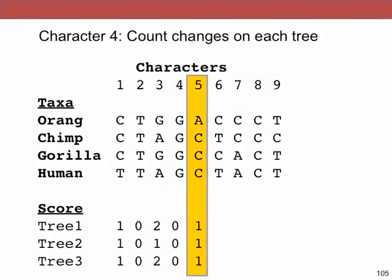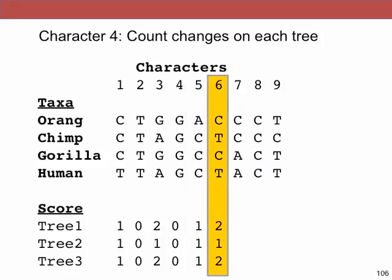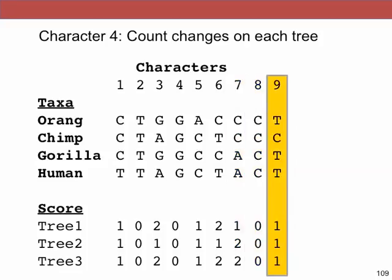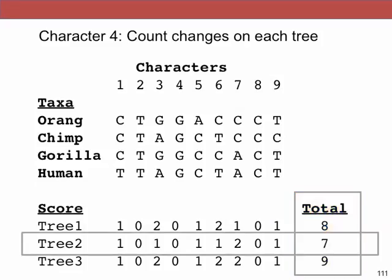Character five scores one, one, one — same for all trees. Character six has the same general pattern as character three, with orangutan and gorilla together and chimp and human together, so the score is the same. Character seven is different: gorilla and human are together, orangutan and chimp are together — tree one gets one, trees two and three each get two. In the end, there is a tree that wins: it's tree number two. In the next lecture we'll talk more about this and discuss other issues with phylogenetic tree inference.